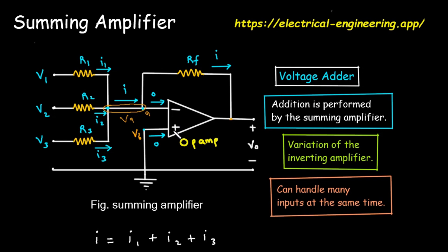On the far left, we see our inputs. These are three separate voltage sources, labeled V1, V2, and V3. Think of these as three different signals we want to combine.